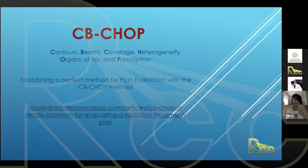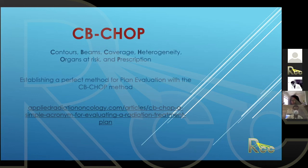Not sure how many people have heard of this acronym called CBCHOP, which stands for Contours, Beams, Coverage, Heterogeneity, Organs at Risk, and Prescription. It's a systematic, easy way to go through your plan evaluation for any case, especially for head and neck, where you are looking at so many things. I have a website here if people want to refer to the paper. We're going to use this today to do the plan evaluation.